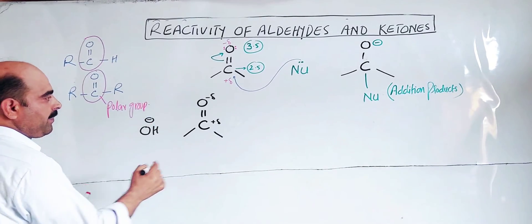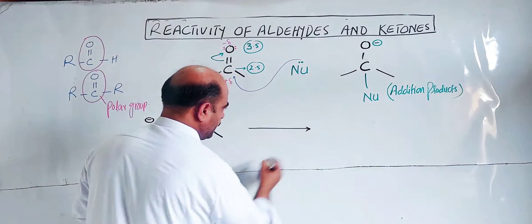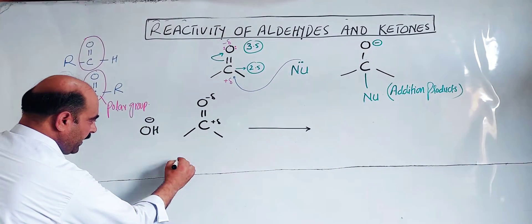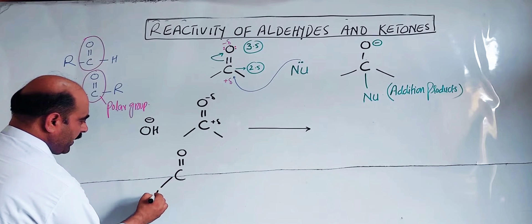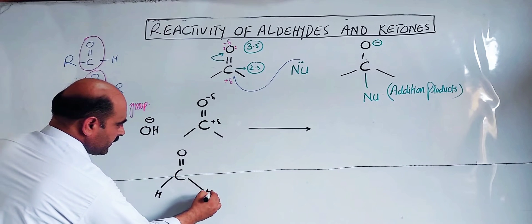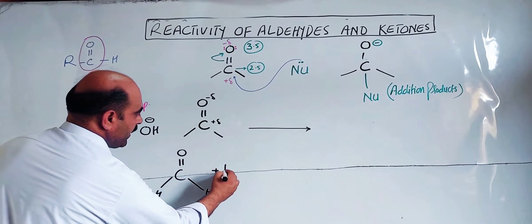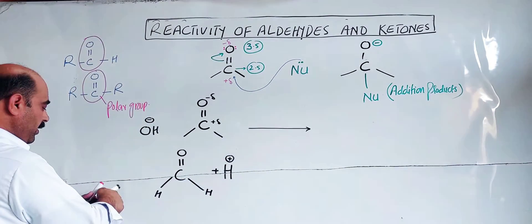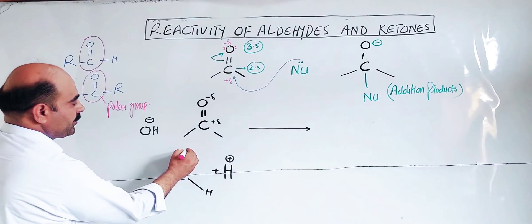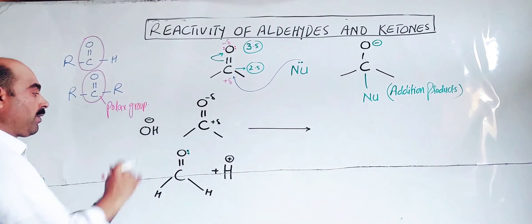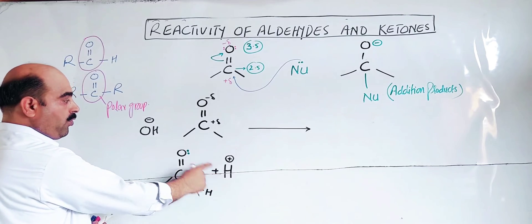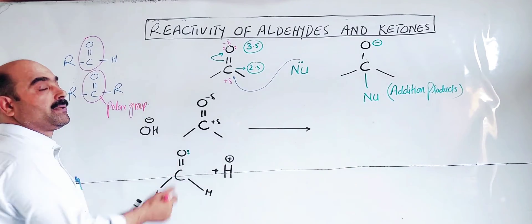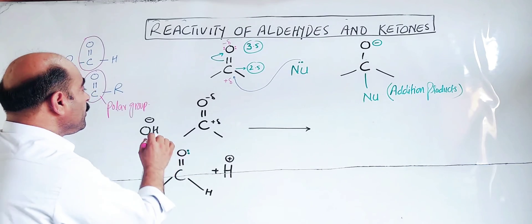In acid catalysis, the acid provides hydrogen ions. The carbonyl group reacts in the presence of acid and base catalysts. In the presence of base, the nucleophilic character is increased. In the presence of acid, the electrophilic character of the carbon is enhanced. These reactions take place in the presence of both acid and base as catalysts.